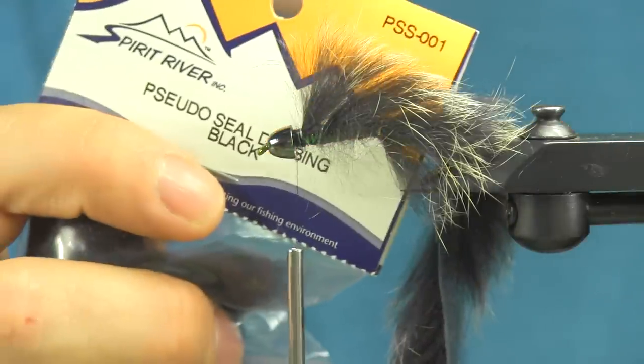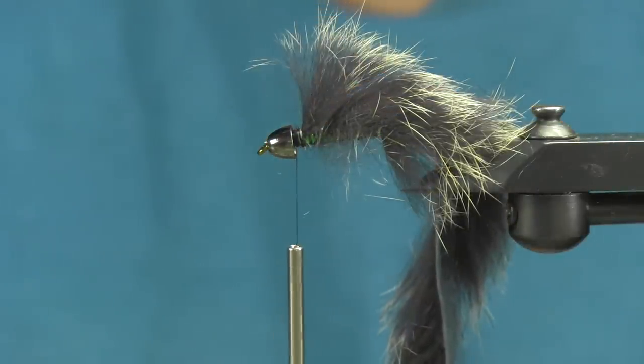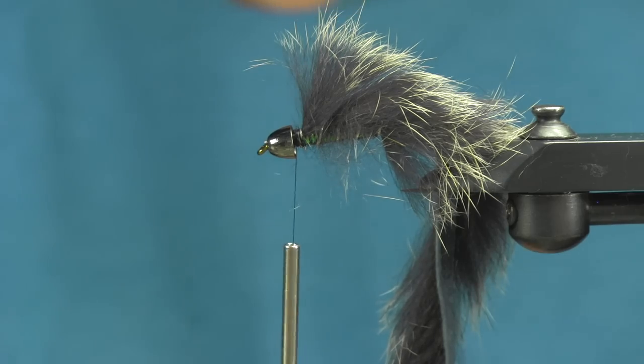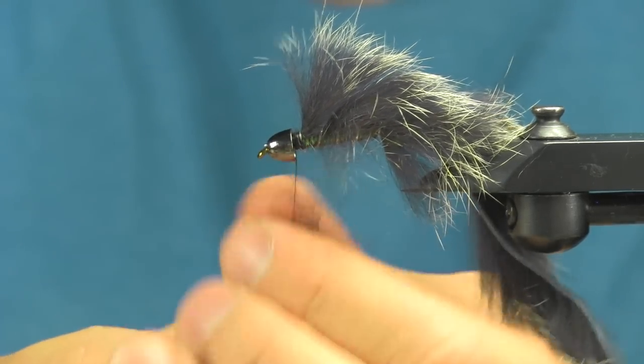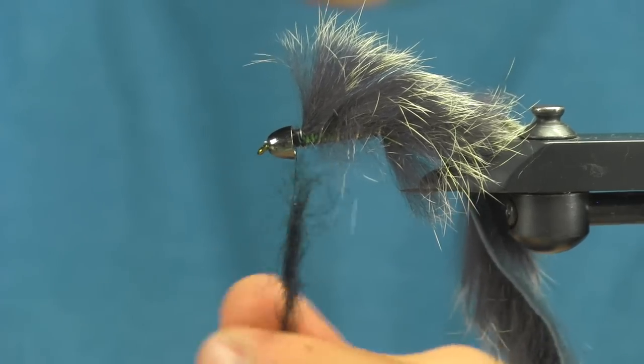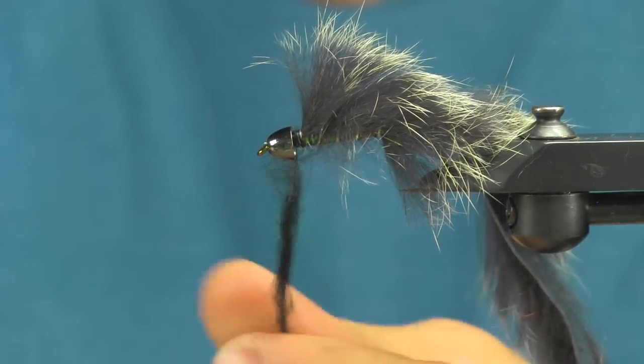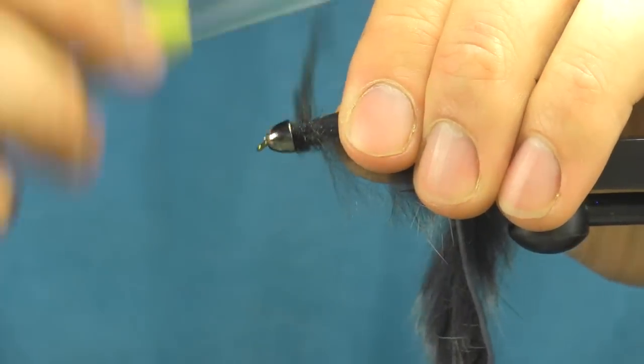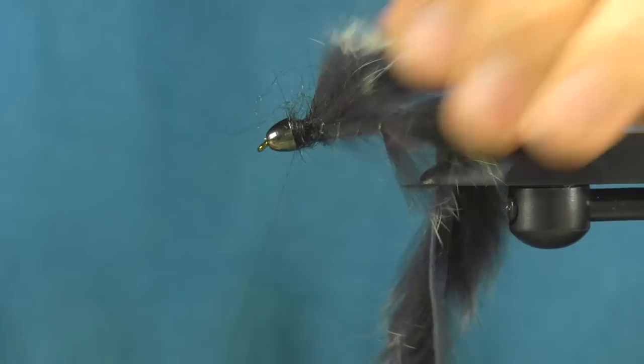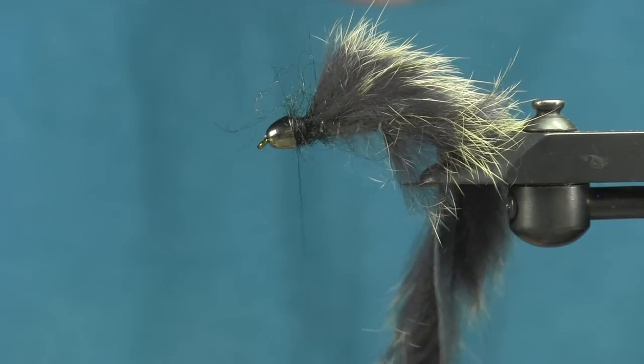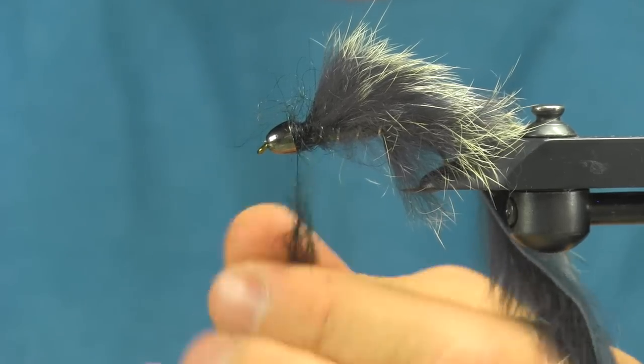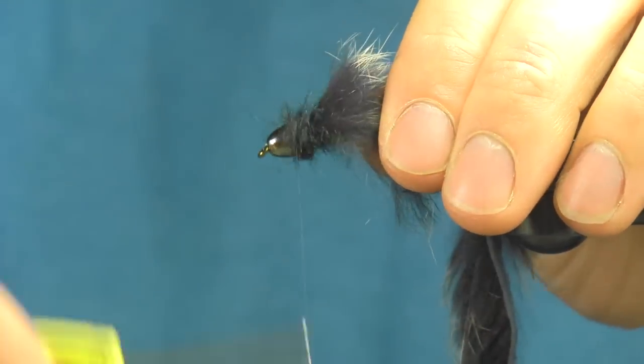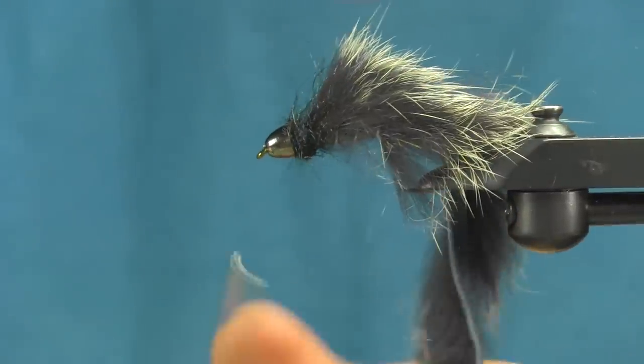And then with a little bit of pseudo-seal black, you can give yourself a nice collar. Dub this in. You'll see more on like a slump buster pattern or in some of these other zonkers, people will either keep wrapping the rabbit strip around the collar or they'll put a hackle in. For this fly, I like it to get down quick and I really don't want any of that stuff interfering with the sink ability of this fly. So I just make a nice, generous, dubbed collar. That'll pick out and look pretty buggy once it gets fishing.